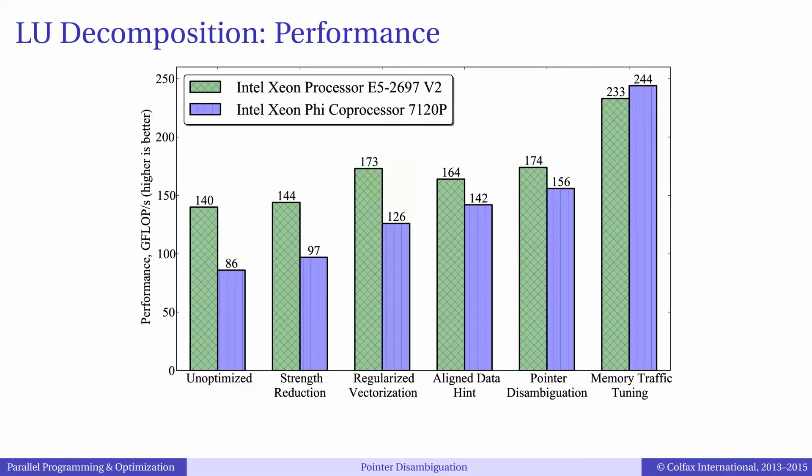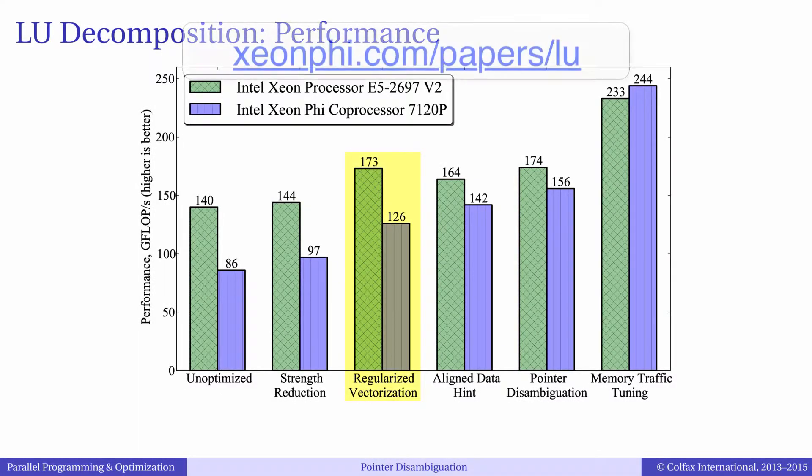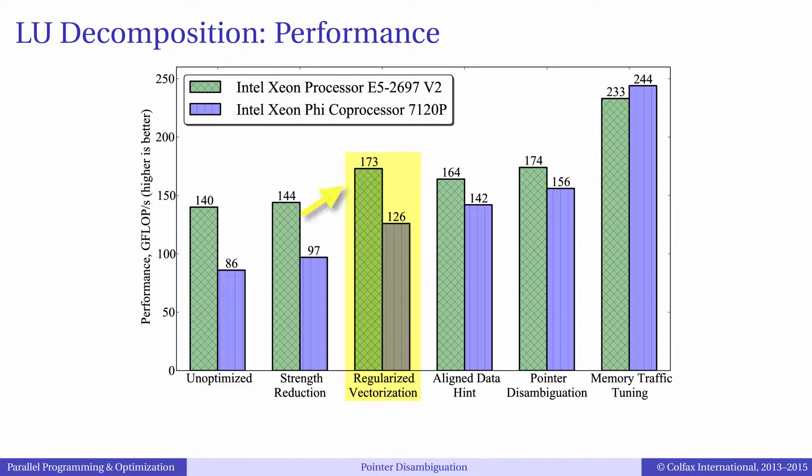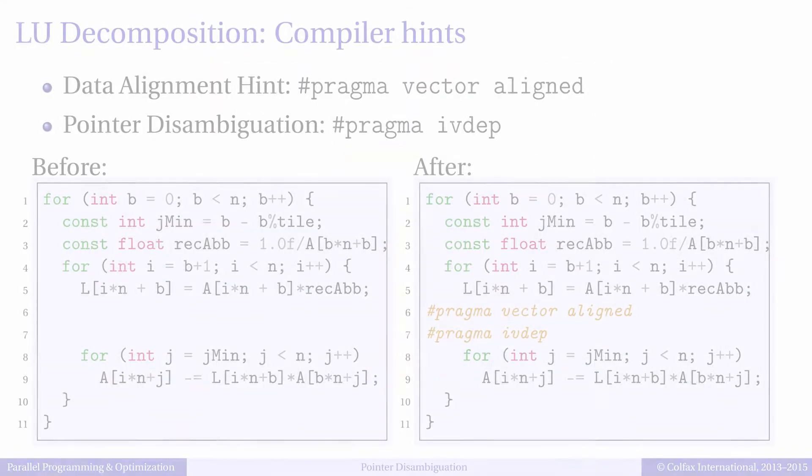We can see the performance effect of this optimization in this chart from the publication. We started here, and thanks to introducing jMin, we increased the performance on Xeon by 20% and on Xeon Phi by 30%.